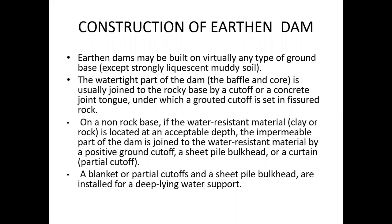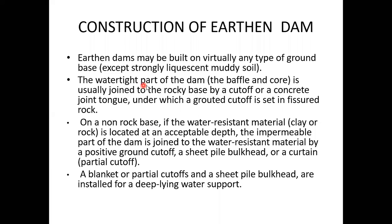Construction of earthen dams: earthen dams may be built on virtually any type of ground base except strongly muddy soils. The watertight part of the dam — the core — is usually joined to the rocky base by cut-off or concrete joined dams, under which grouted cut-off resides in fissured rocks.